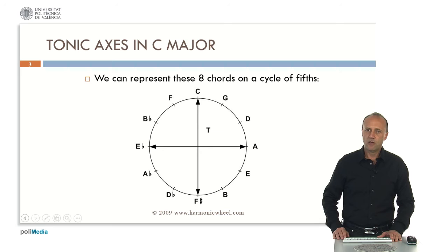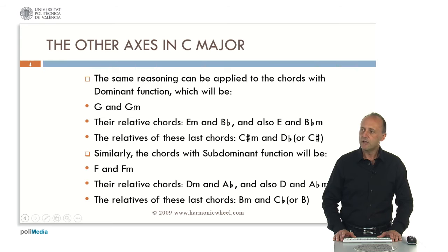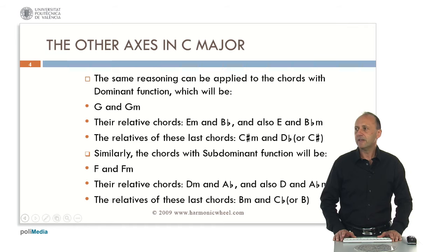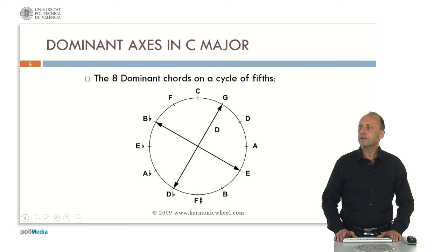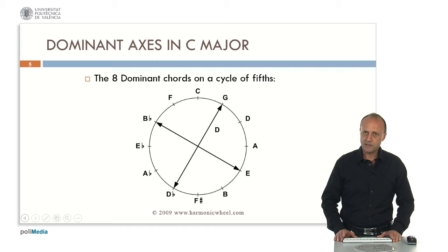We can repeat the process for the dominant and subdominant chords. If we start with dominant chord G major, we look for parallel and relative chords and we find G minor, then the relative chords E minor and B-flat major, the parallel of these chords E major and B-flat minor, and the relatives of these last chords, C-sharp minor and D-flat major or C-sharp major. If we represent these eight chords on a cycle of fifths, we again obtain two axes. In the primary axis, we have G major and D-flat major. D-flat major is the tritone substitute for G major, also known as the Neapolitan sixth chord in C major.